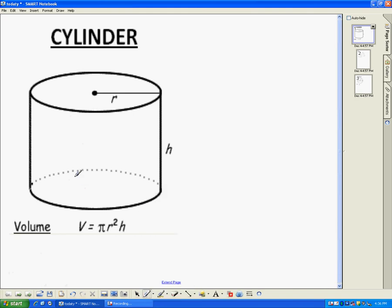The volume of a cylinder is pi r squared h, where r represents the radius. Remember, the radius is from the center to the edge, which is also the same thing as half of the diameter. And the height is the height on the side.